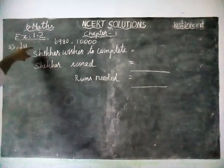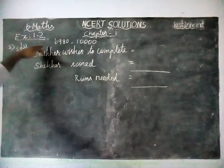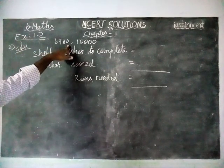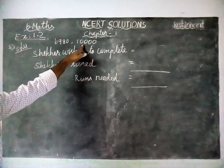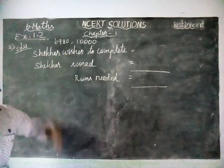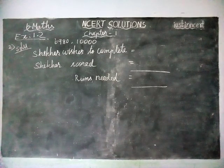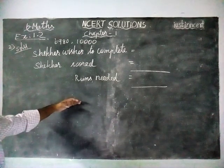In the second question, Sagar was a cricket player and he has scored 6,980 runs so far. He wants to complete 10,000 runs. They asked us to find — listen carefully — how many more runs does he need? You can underline that. The meaning is that we have to find subtraction.